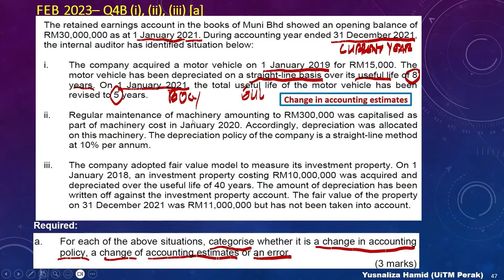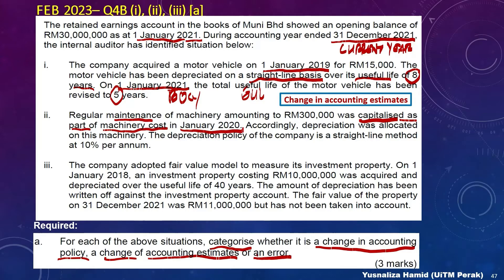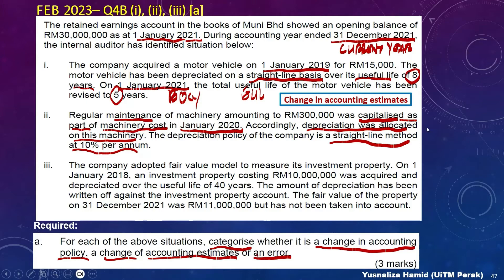In scenario 2, regular maintenance of machinery amounting to 300,000 was capitalized. Maintenance costs are actually revenue expenditure, but this was capitalized as part of the machinery costs. It was clearly wrongly recognized since January 2020. Depreciation was also allocated on this machinery, overstating the depreciation using straight-line method. There are two wrong treatments: depreciation wrongly allocated and maintenance wrongly capitalized. This is a prior period error.